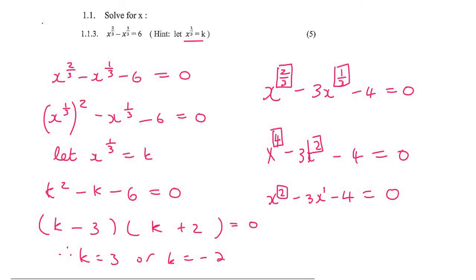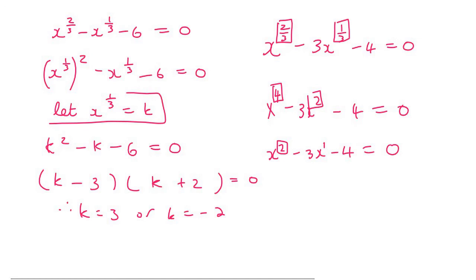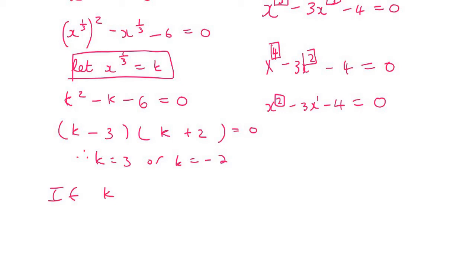But now that's not the answer. That's the answer for k, but we want the answer for x. So then what we do is we come back to this, and we need to use each of these now. So if k equals 3, then we can say x^(1/3) = 3. And then for the other one, if k equals -2, then we can say x^(1/3) = -2.